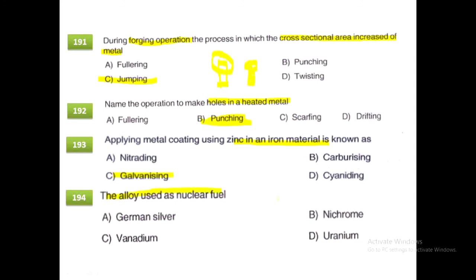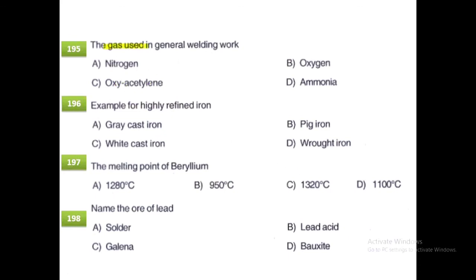An alloy is used as nuclear fuel. The gas used in general welding work is oxy-acetylene, which produces a flame. The melting point of babbitt is 280 degrees Celsius. The ore of lead is galena.